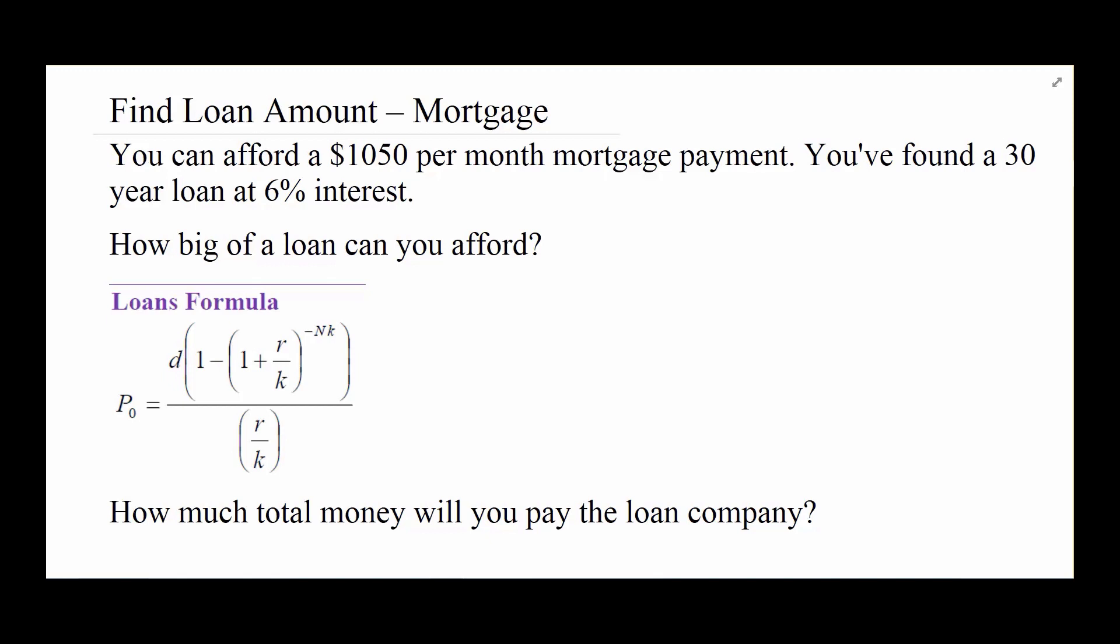Let's look at one more of these loan problems. Let's look at a mortgage one. Suppose that you know that you can afford $1,050 a month towards a mortgage. You found a 30-year loan at 6%. 6% is kind of a big interest rate there. We want to figure out, though, how big of a loan could I actually afford? If that's the monthly amount. This is important when you're house hunting because you want to be able to say, what's my price range?